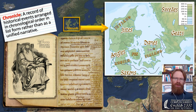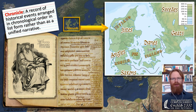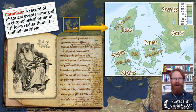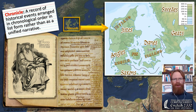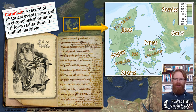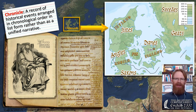Unlike most of the authors we've read so far in this class, Saxo is writing a chronicle. He's not setting out to write a work of literature or a unified narrative with coherent characters — something like an epic that has something holding all of the individual events or episodes together. A chronicle is a record of historical events arranged in chronological order in list form: here's a year and here's what happened that year, rather than a unified narrative.